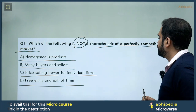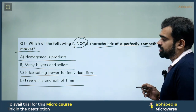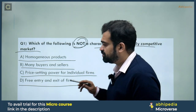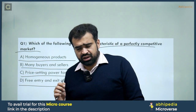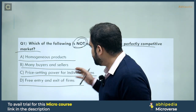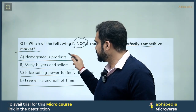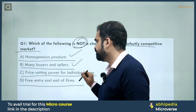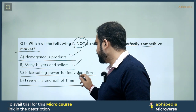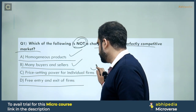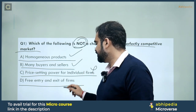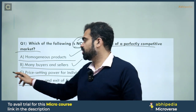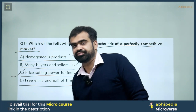In a perfectly competitive market: homogeneous products — yes; many buyers and sellers — yes; price-setting power for individual firms — no; free entry and exit — yes. So the correct answer is option C — price-setting power for individual firms.